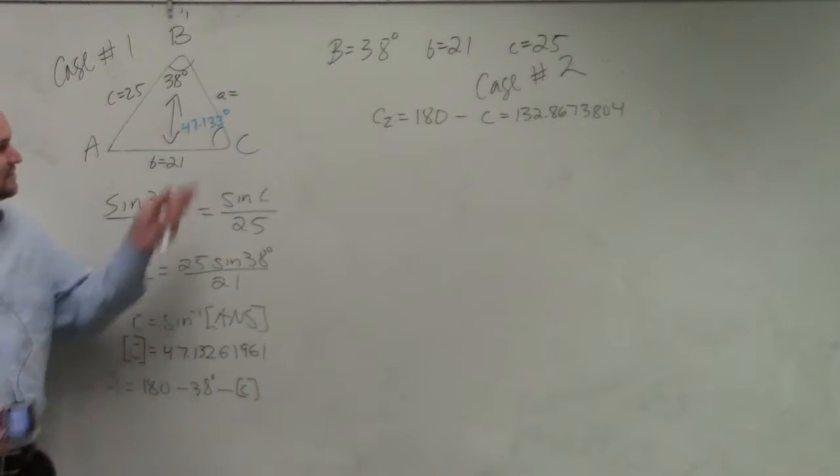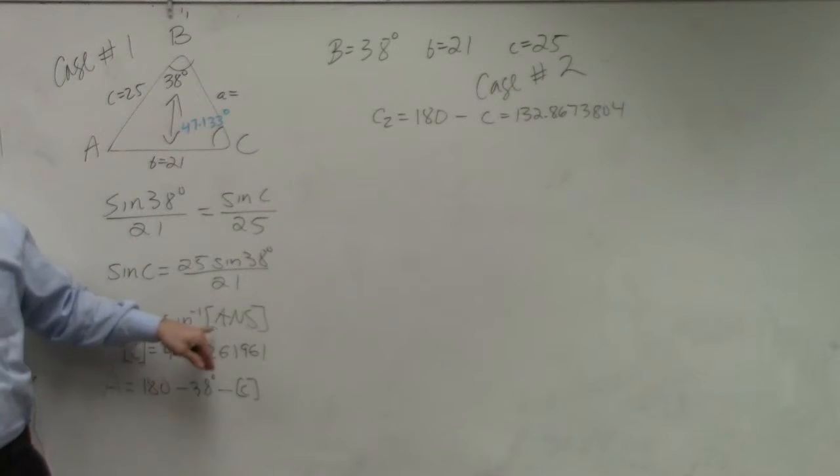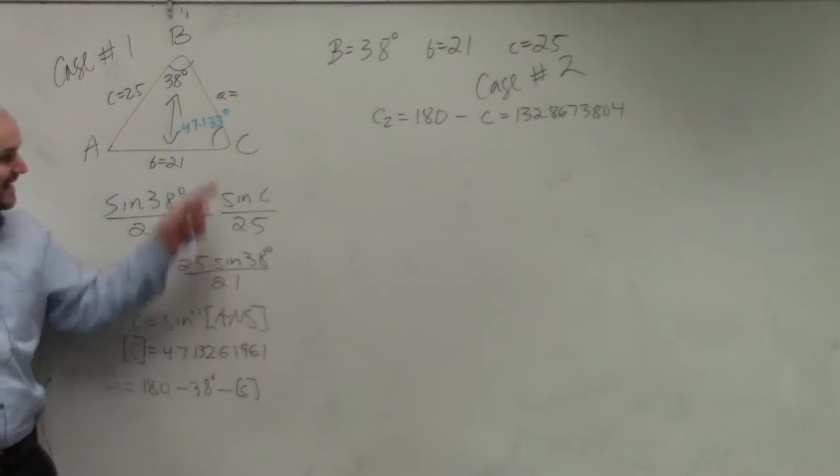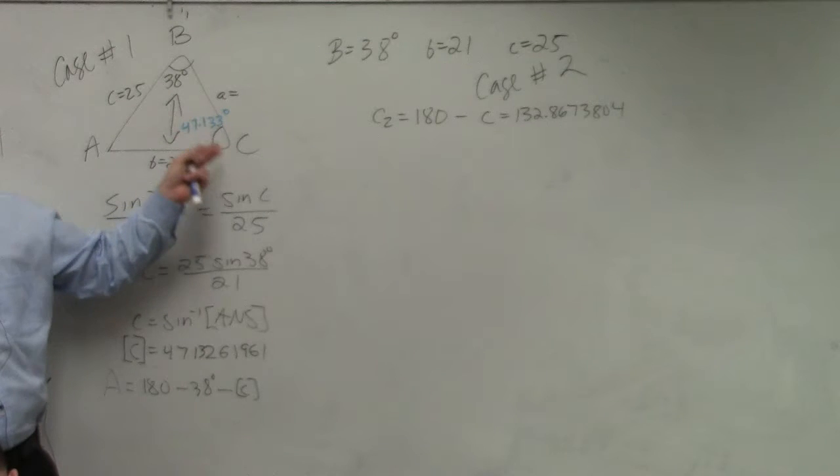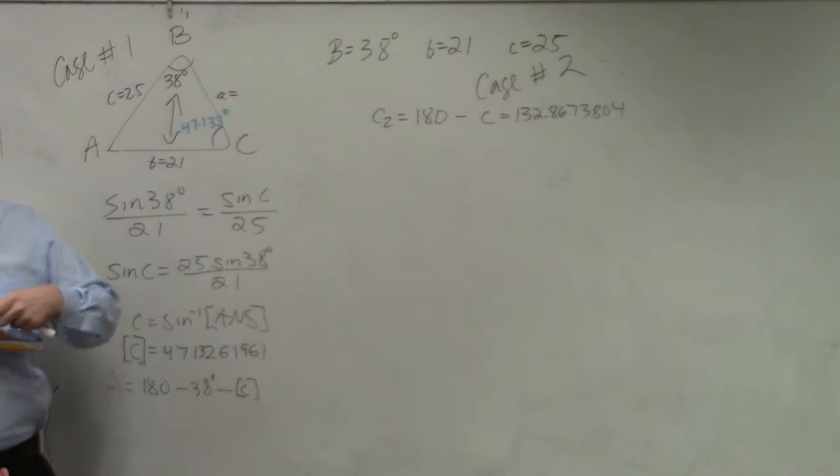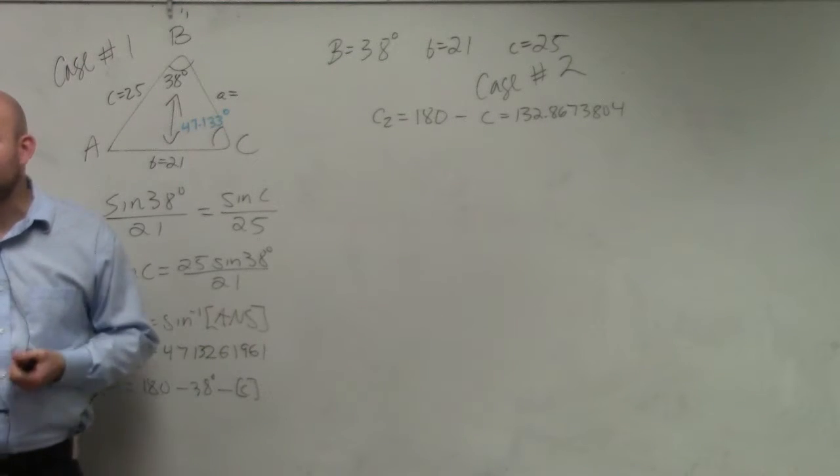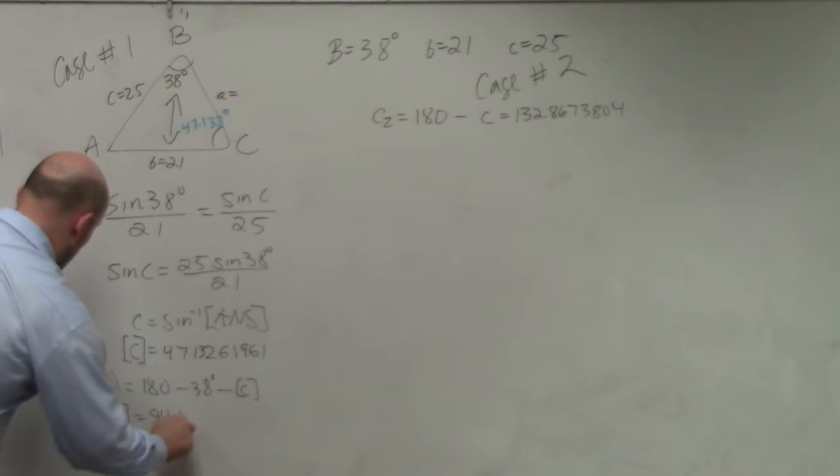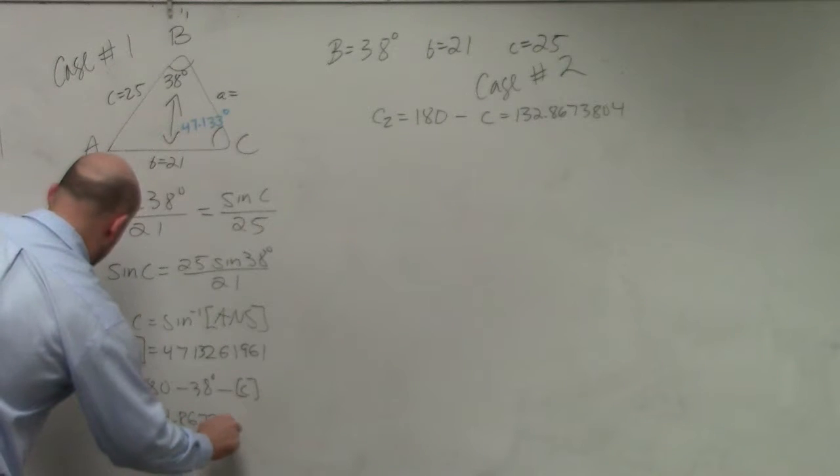Angle a equals 180 degrees minus 38 degrees minus c. Do not use your abbreviate answer. Either type in the whole angle, or store it into your calculator and use that value. Do not use this, which is my third most common mistake. The students will use the rounded answer, and they'll get a rounding error at the very end.